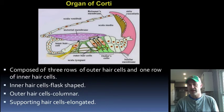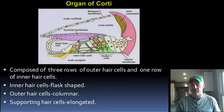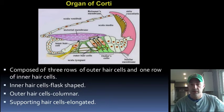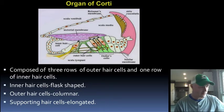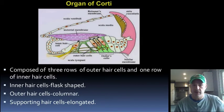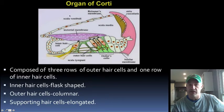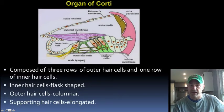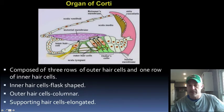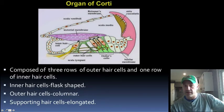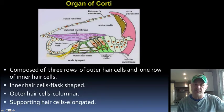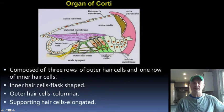The organ of Corti sits within the membranous labyrinth, with the basilar membrane below and the scala vestibuli going out and scala tympani coming back. There is a tongue-shaped structure called the tectorial membrane sitting on top of the hair cells — you can see both the inner and outer hair cells here.